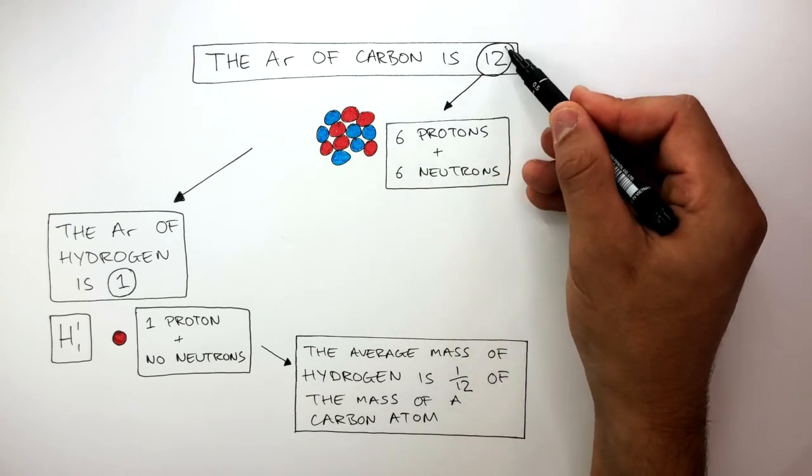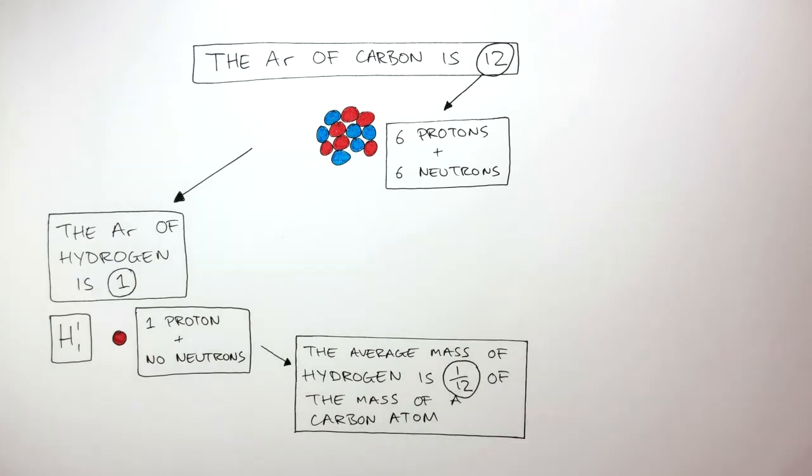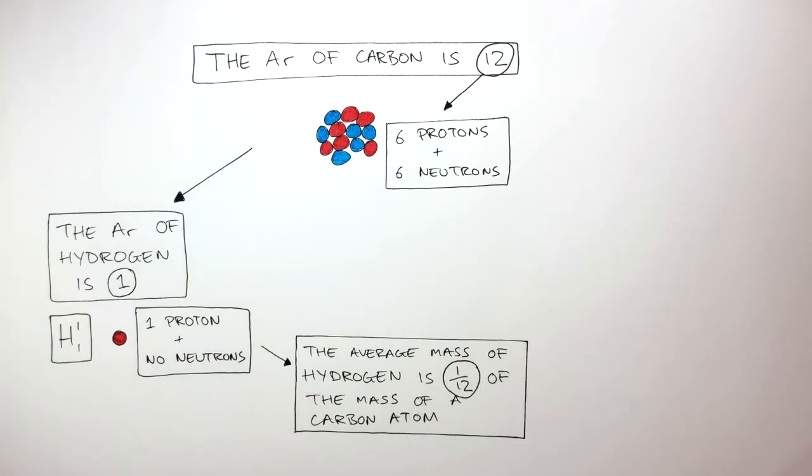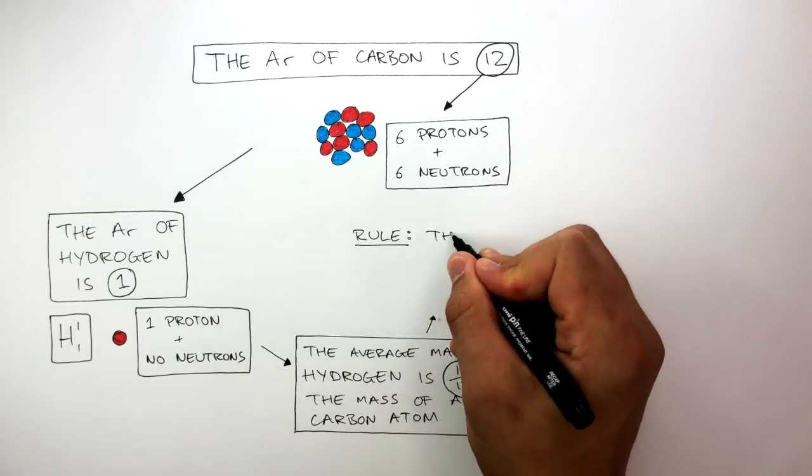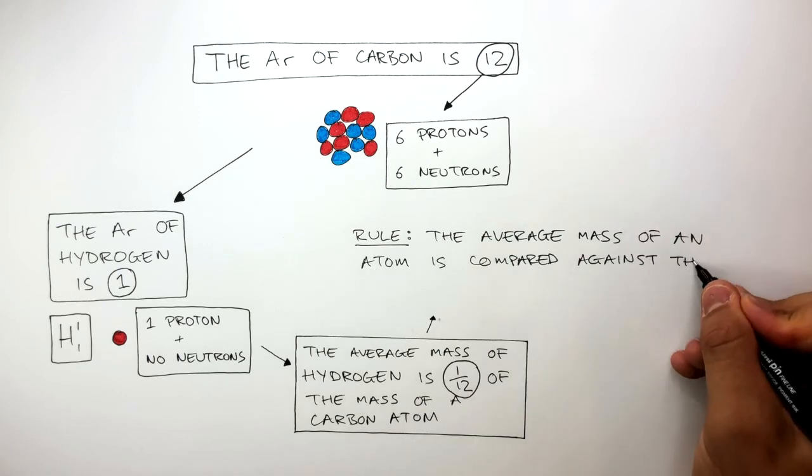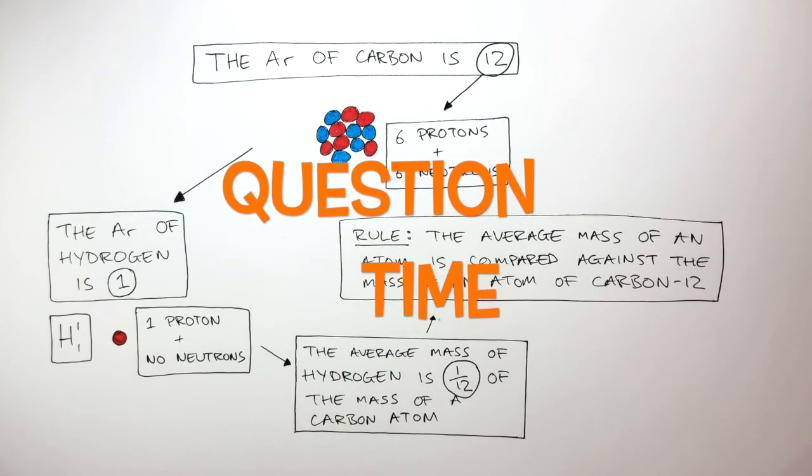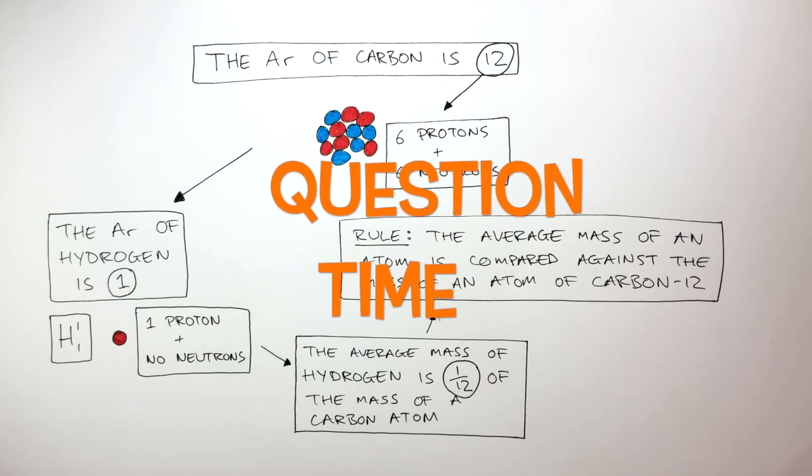Therefore, the mass of hydrogen is 1 twelfth the mass of a carbon atom. So, because of this, the rule is, the average mass of an atom is compared against the mass of an atom of carbon-12. It's question time. Attempt these questions to check your understanding.